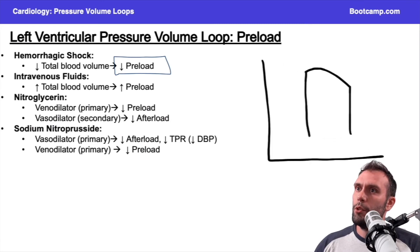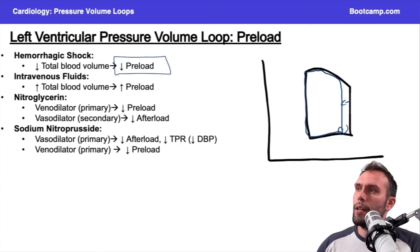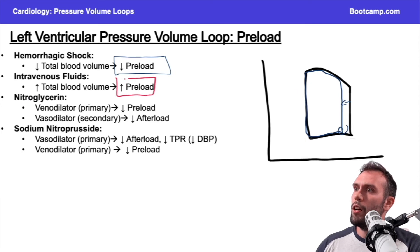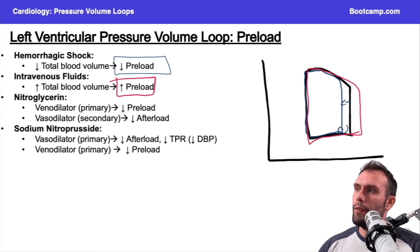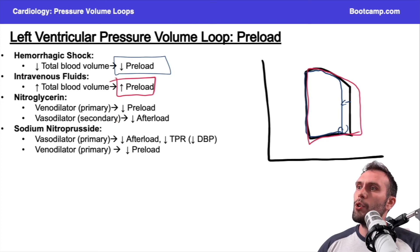Just to go through this one more time: if I decrease preload, I move the end-diastolic volume to the left — for example, in hemorrhagic shock, preload comes down and shifts left. If preload goes up, I shift the curve to the right. Classic examples include adding fluids to increase total blood volume, or hemorrhagic shock causing low total blood volume. What about nitroglycerin? It's primarily a venodilator, with secondary effects on arteries.